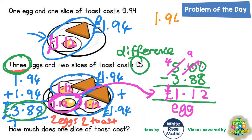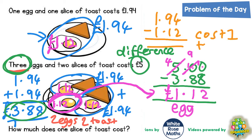So £1.94 take away £1.12 — this will be the cost of one toast. Let's see what that is. 4 take away 2 is 2, 9 take away 1 is 8, 1 take away 1 is 0. Put your decimal point in, put your pound sign in. So your final answer: one slice of toast is £0.82.